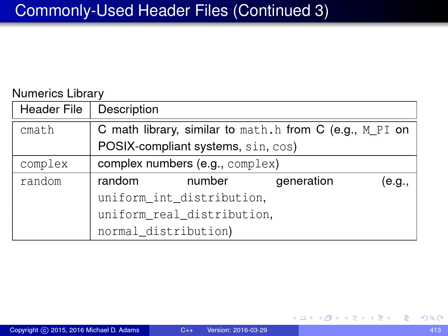On this slide I have a list of some of the header files associated with the numerics portion of the standard library. The first header file listed is cmath, which has declarations and definitions related to mathematical functions like sine and cosine. On POSIX-compliant systems, it defines M_PI as the mathematical constant pi. The complex header has a definition of the complex class template for complex numbers. The random header has a lot of different functionality for random number generation, with many different distributions available.